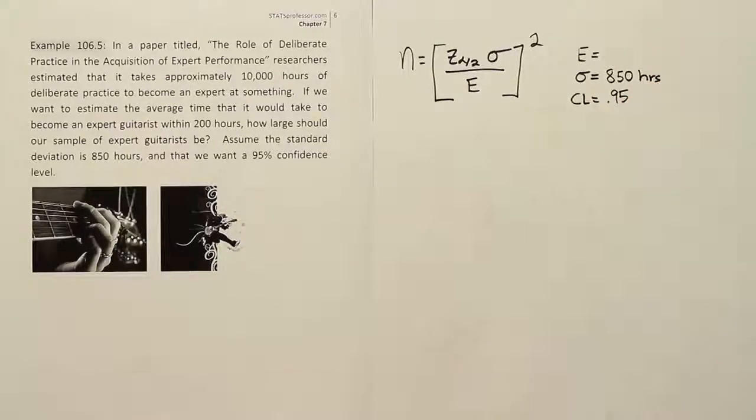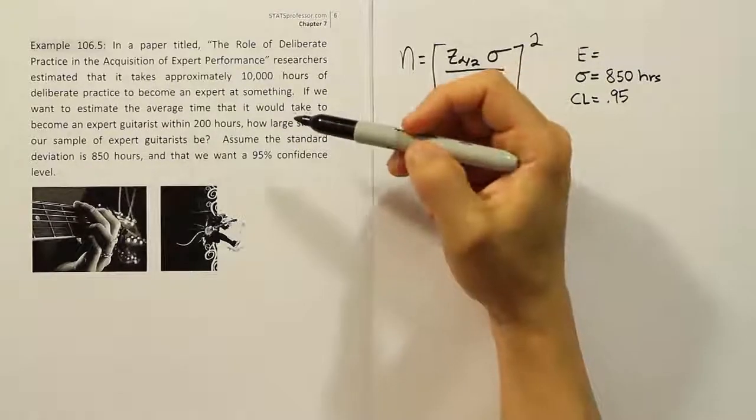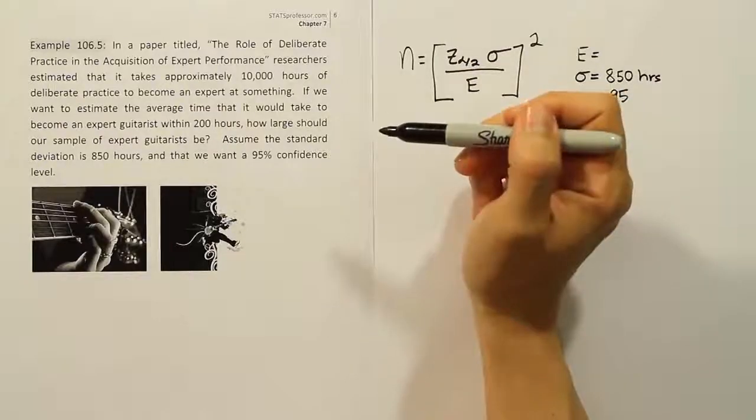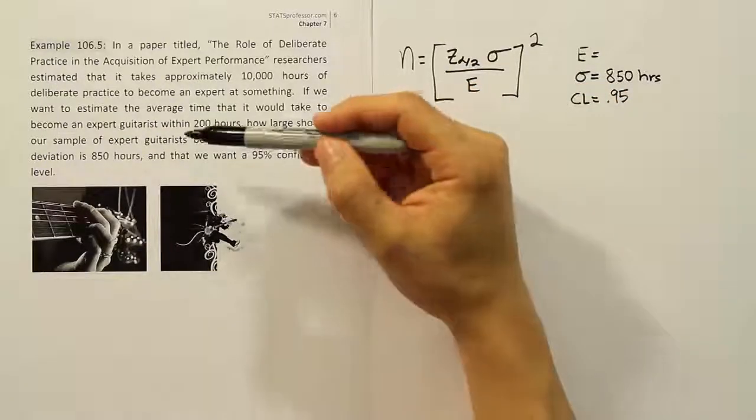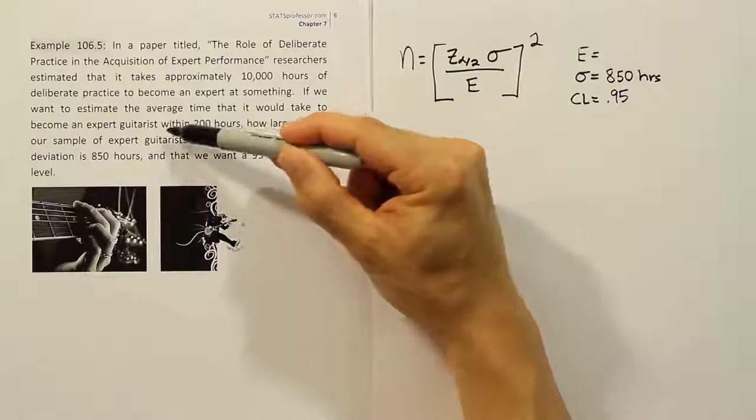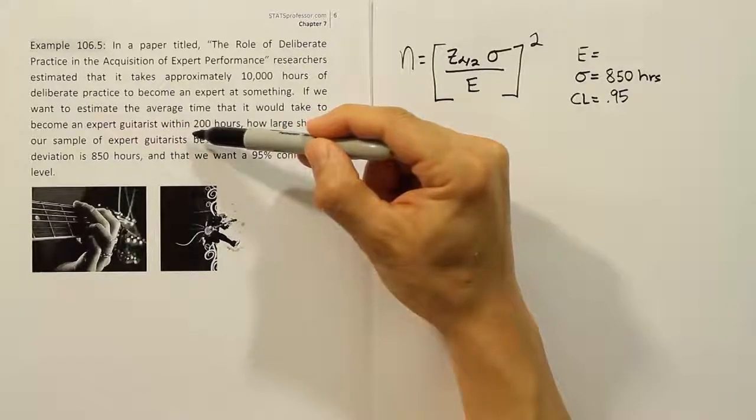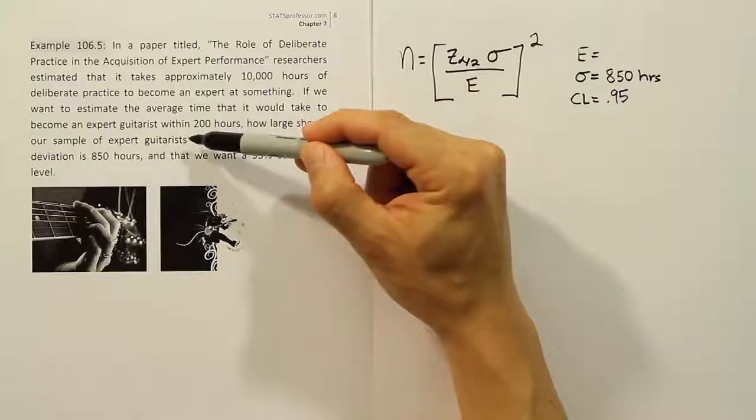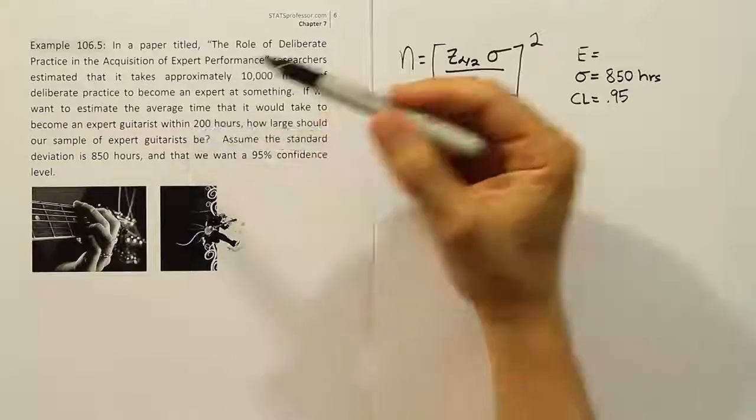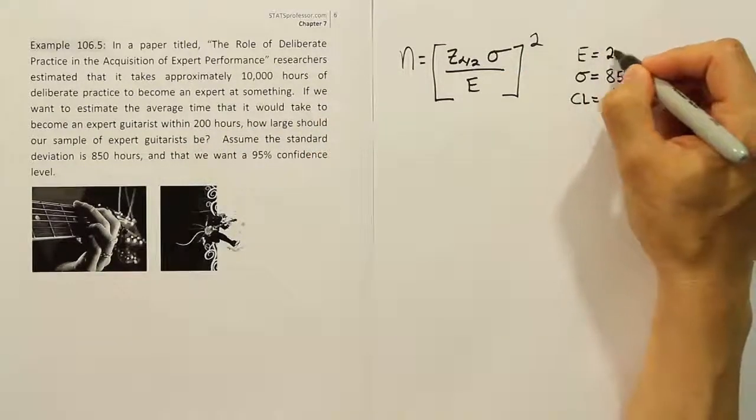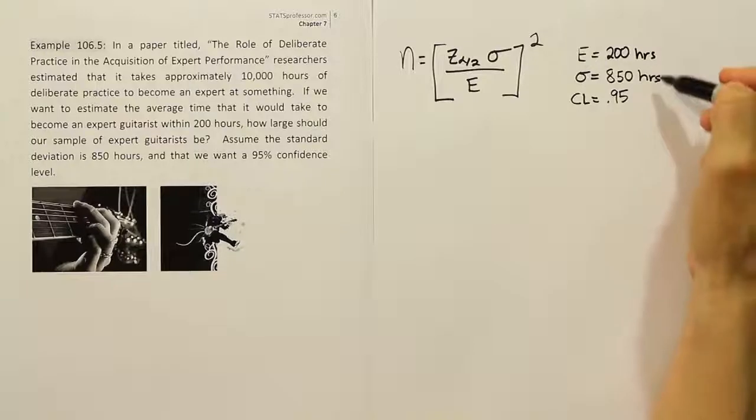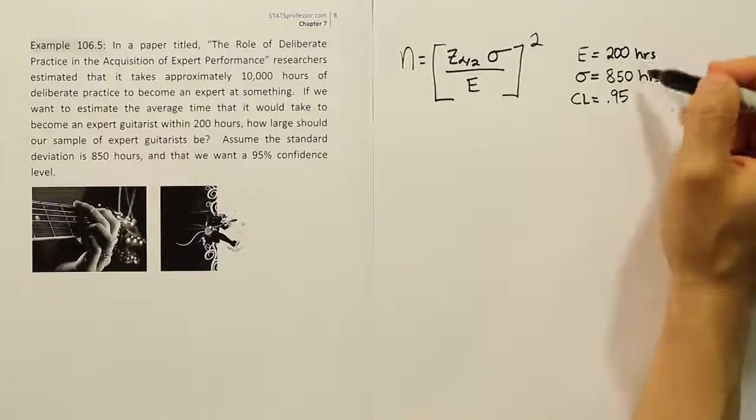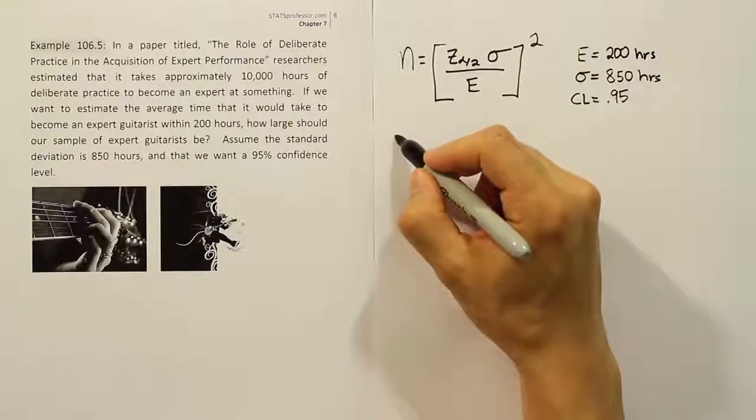Okay, the margin of error is what I need next. Sometimes problems explicitly say margin of error, which would be helpful. But if not, we have a key phrase. The key phrase here is 'within.' That phrase is used often to indicate the margin of error, because we want to estimate the mean within that 200-hour margin of error. So we'll use 200 as our margin of error, E = 200 hours. It's important that the units match up. They do—both are in hours, so that's good.